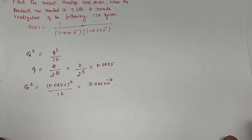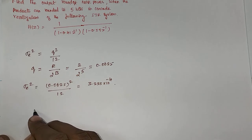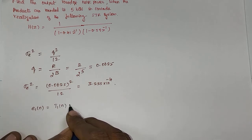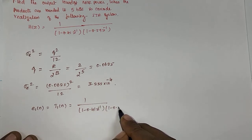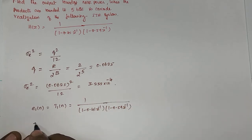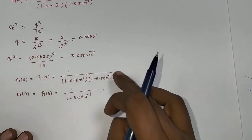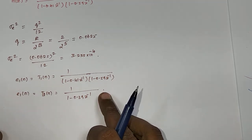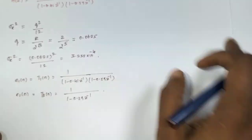In this system realized in cascade form there are two systems, so there are two error noise sources. The first error noise is e1(n) with transfer function (1 - 0.41·z⁻¹)(1 - 0.59·z⁻¹), and the second error is e2(n) with transfer function (1 - 0.59·z⁻¹). After finding the system noise variance for each transfer function, add the two noise variances to find the total round-off noise power.